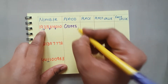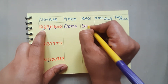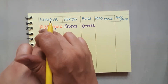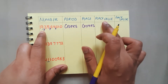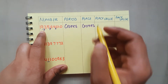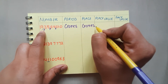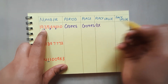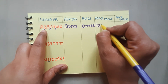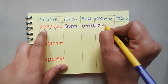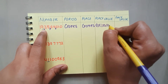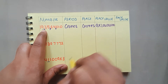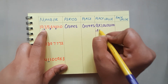What is the place? Crores only — because the first place in the crores period is crores. Now what is the place value? The place value of nine at the crores place is nine into one crore. This is lakhs, this is thousands, this is ones — so nine into one crore equals nine crores.